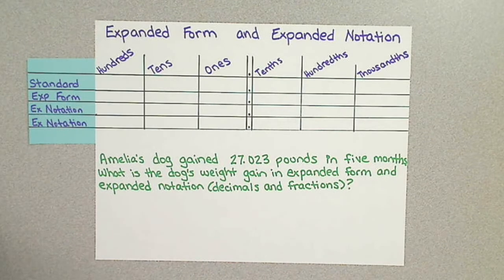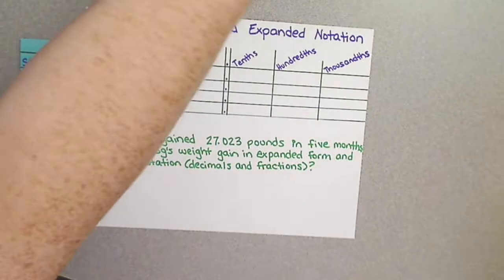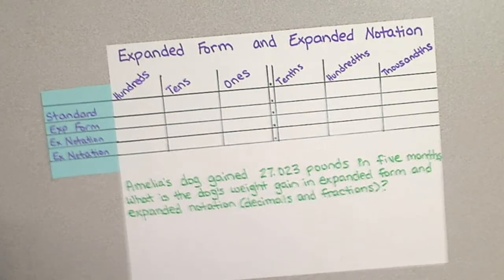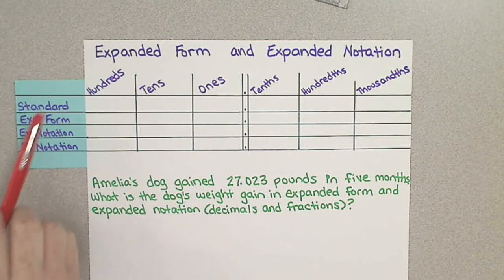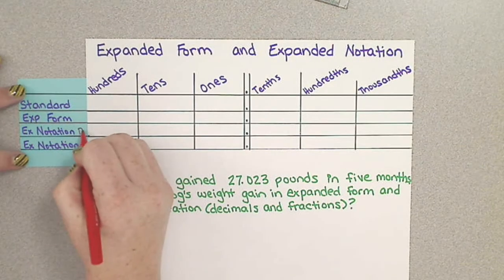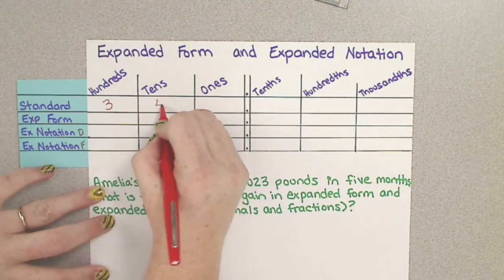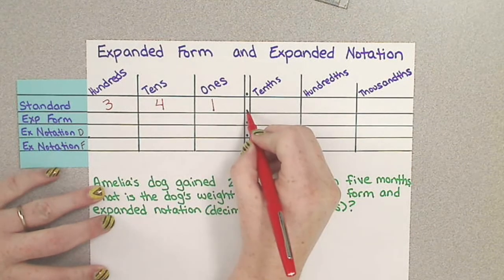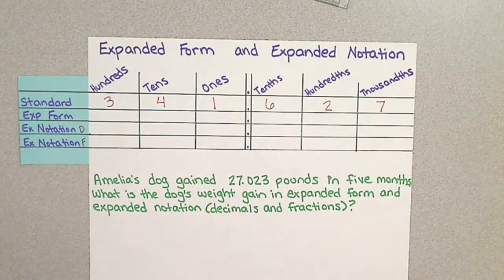Alright, so the first thing we're going to do is look at a specific number. We're going to break down a basic number and look at how it looks in standard form, expanded form, expanded notation with decimals, and expanded notation with fractions. The number that I have is 341 and 627 thousandths.